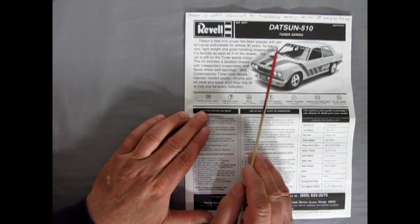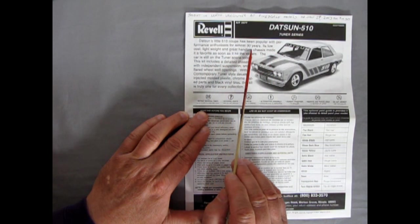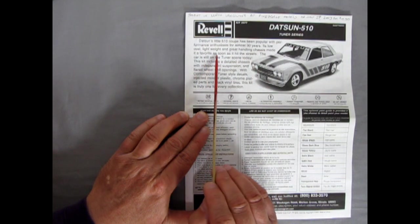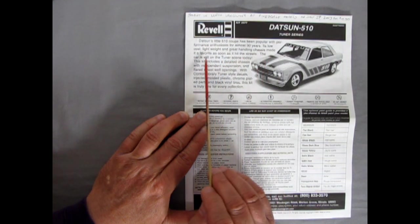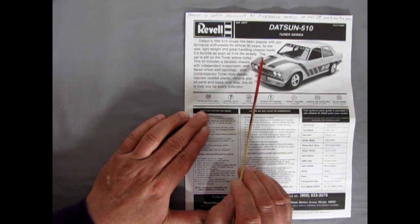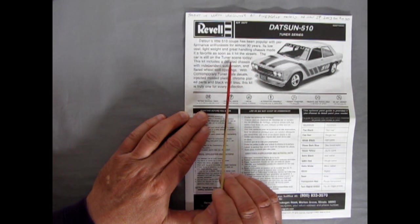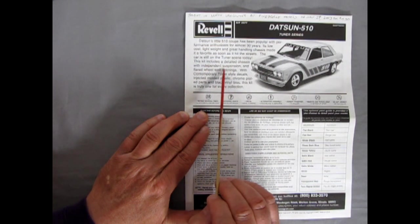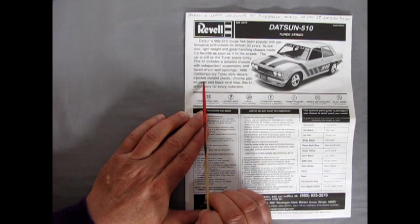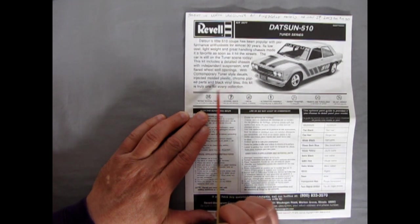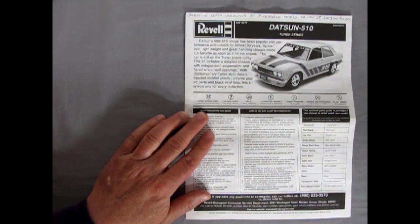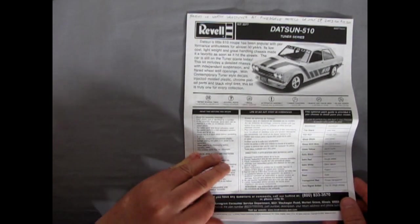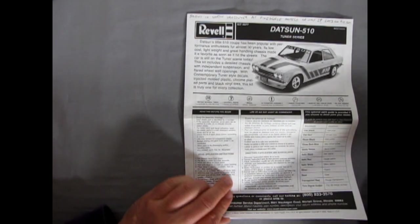Anyway I'll just read this bit. Datsun's little 510 coupe has been popular with performance enthusiasts for almost 30 years. Its low cost, lightweight and great handling chassis make it a favorite as soon as it hit the streets. The car is still on the tuner scene today. This kit includes a detailed chassis with independent suspension and flared wheel well openings. With contemporary tuner style decals, injected molded plastic, chrome plated parts and black vinyl tires. This kit is truly one for every collection. Well I've got it in my collection.